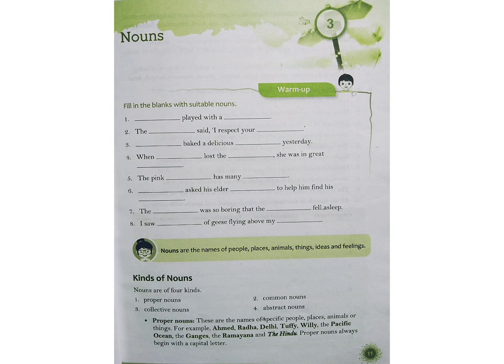Nang ma, ming ke ma, ming te po hi, proper noun ane. Kan ko, ming kan veng, ming kan ram, ming heng te po hi, proper noun ane niya. Kan ran, ming antinan, kan uite, kan zote, te, ming te po ka, proper noun ane. For example, Amit, Radha, Delhi, Tafi, Willy, the Pacific Ocean, the Ganges, the Ramayana, and the Hindu. Proper nouns always begin with a capital letter.